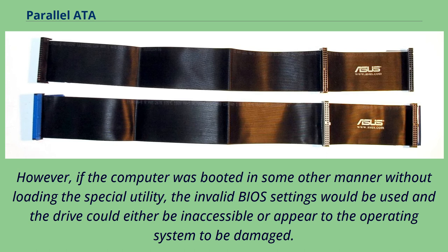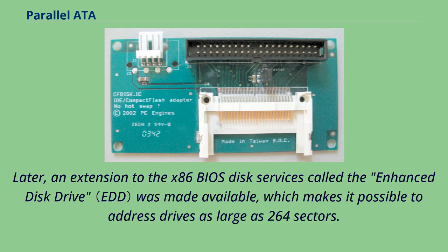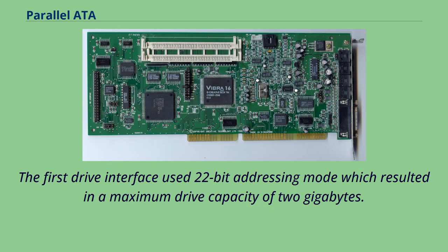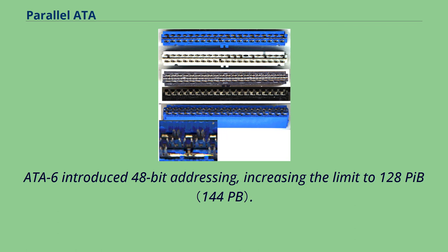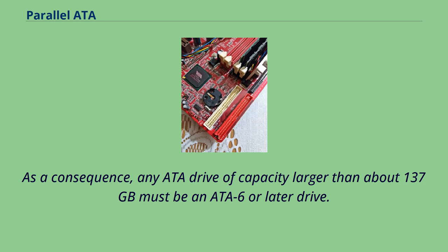Later, an extension to the x86 BIOS disk services called the Enhanced Disk Drive was made available, which makes it possible to address drives as large as 2^64 sectors. The first drive interface used 22-bit addressing mode, which resulted in a maximum drive capacity of 2 gigabytes. Later, the first formalized ATA specification used a 28-bit addressing mode through LBA28, allowing for the addressing of 2^28 sectors of 512 bytes each, resulting in a maximum capacity of 128 gigabytes. ATA-6 introduced 48-bit addressing, increasing the limit to 128 petabytes. As a consequence, any ATA drive of capacity larger than about 137 gigabytes must be an ATA-6 or later drive.